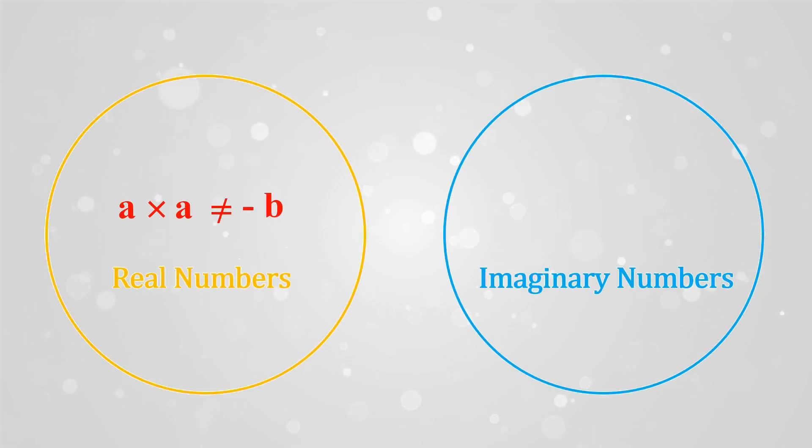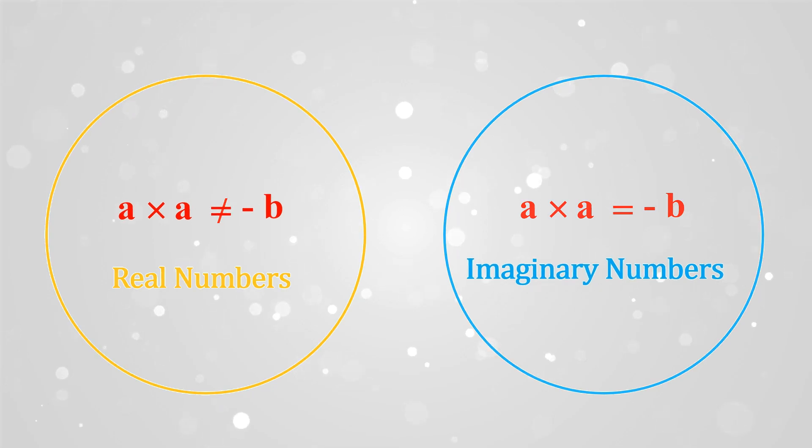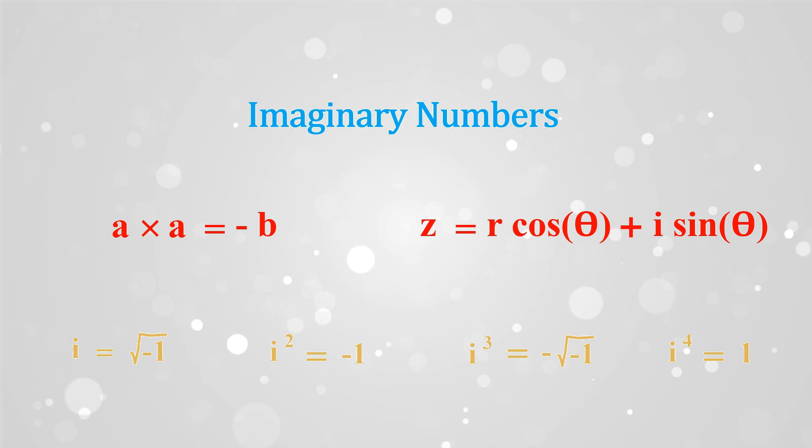In real numbers, a times a equals minus b is an impossible, incorrect, or invalid equation. But it's possible and valid in the imaginary number domain, and to support that, a new set of fundamentals are created in its own domain.